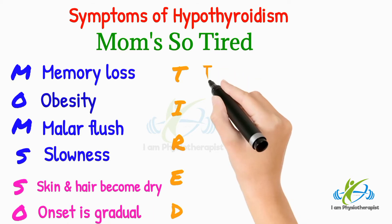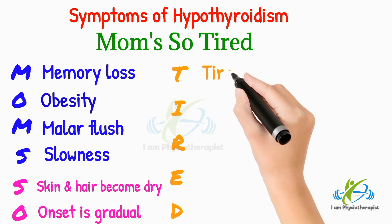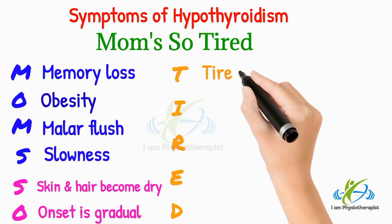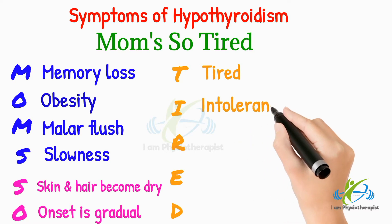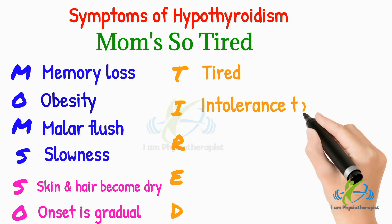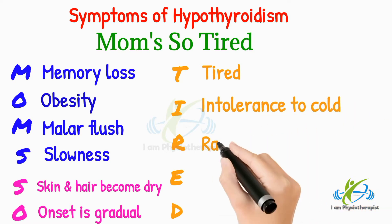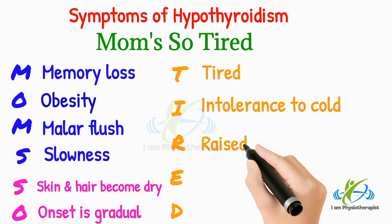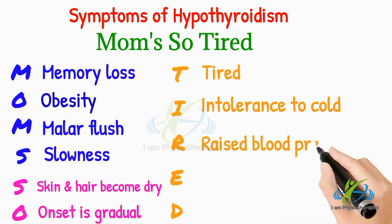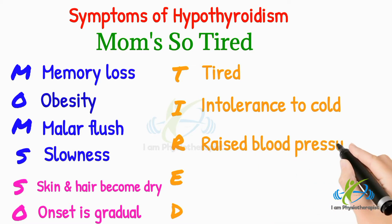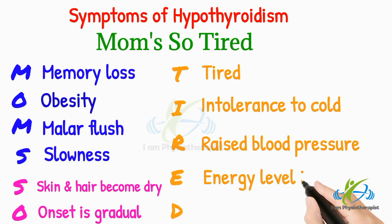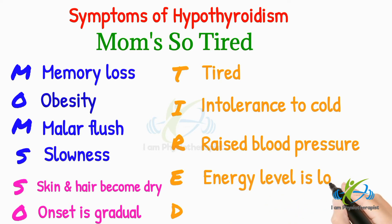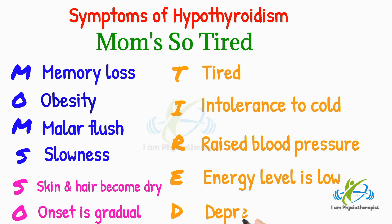T stands for tired. I stands for intolerance to cold. R stands for raised blood pressure. A stands for energy level — patients with hypothyroidism have low energy levels. D stands for depressed.